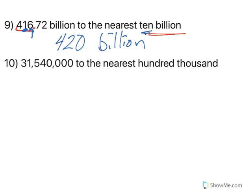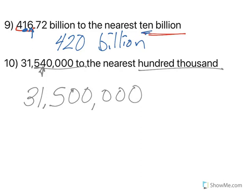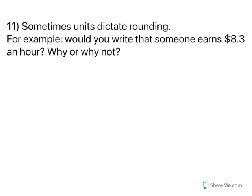And then we have 31,540,000 to the nearest 100,000. Well, the 5 is in the 100,000 place. So 4 tells me to round down. So I have 31,5. And then everything else is zeros. The more you practice these, the easier they get. So let's answer a couple of questions.